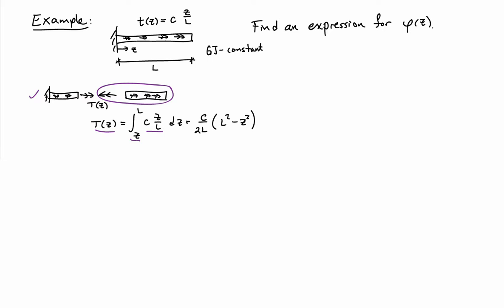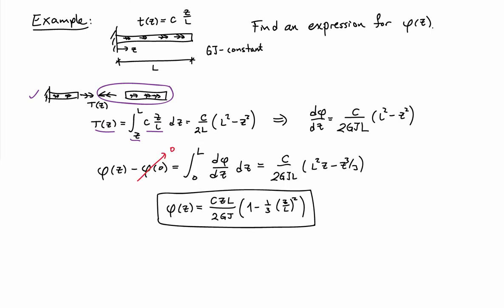The internal torque is related to the twist rate by dividing the internal torque by GJ. So I immediately get an expression for the twist rate as a function of Z. To find the rotation itself, I just need to integrate this relationship. I'll integrate from 0 to some arbitrary location Z.